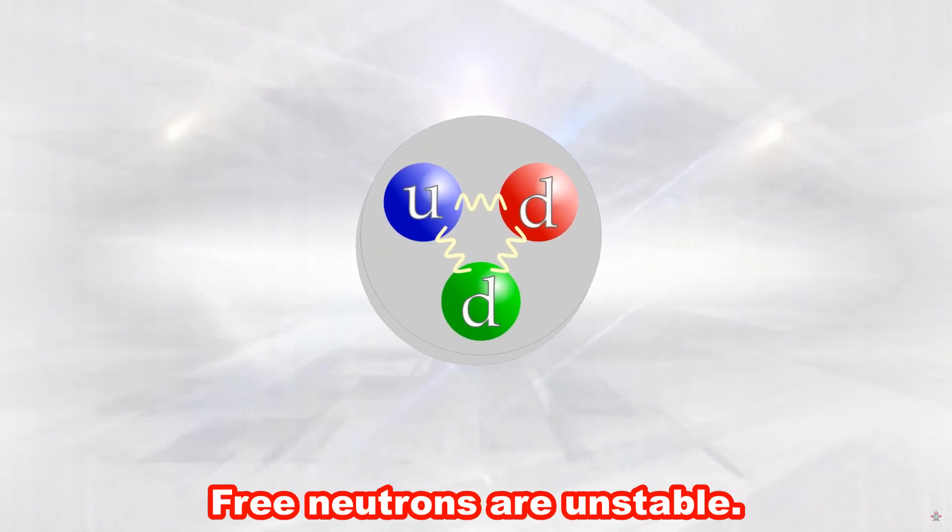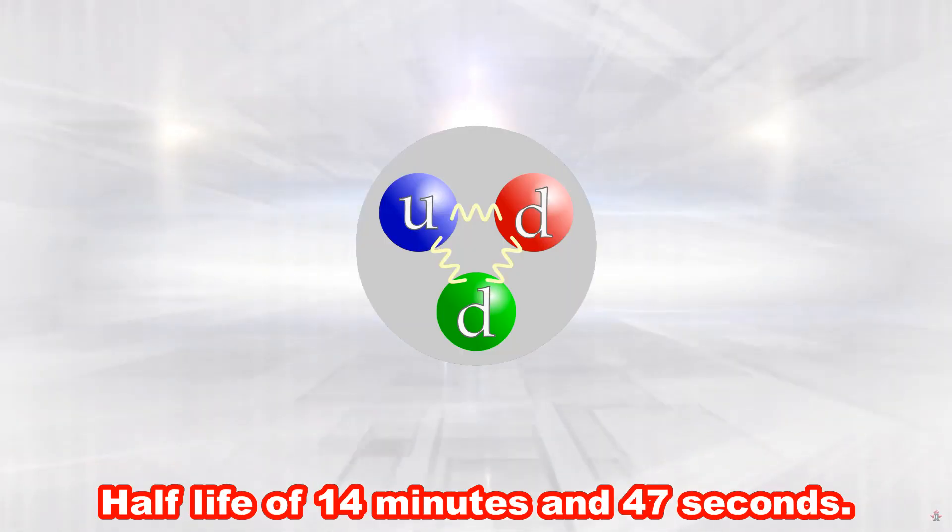Free neutrons are unstable. When it is free it has a short half life of 14 minutes and 47 seconds.